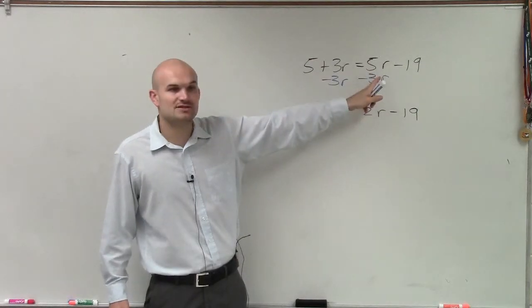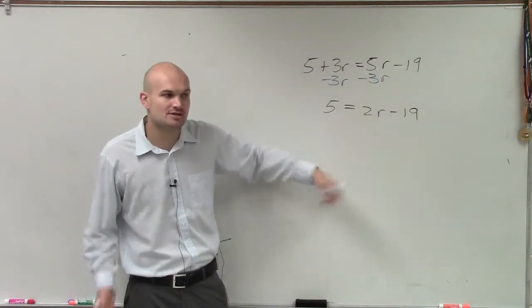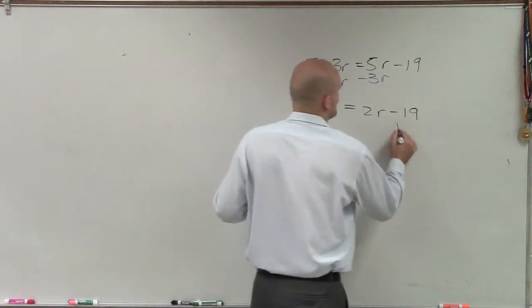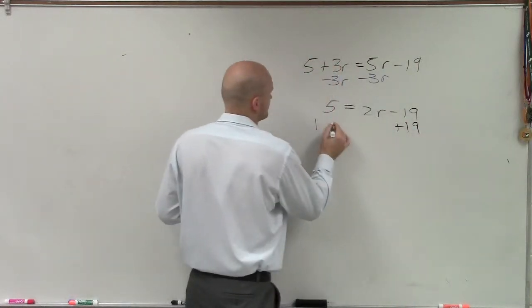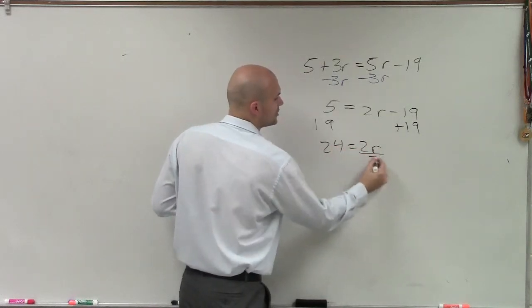So 5r minus 3r is 2r. Now it's a two-step equation. Remember, two-step equations, you always undo addition and subtraction first, then undo multiplication and division.